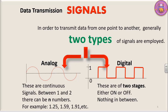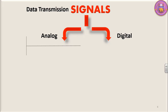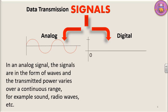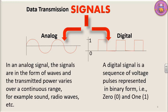On the other side, we have digital signals. Digital signals are of two phases — either it can be on or it can be off; there is nothing in between. But in the case of analog, fractional numbers are there. In an analog signal, the signals are in the form of waves and the transmitted power varies over a continuous range — for example, sound, radio waves, etc. In the case of digital signals, they are in the form of 0s and 1s. A digital signal is a sequence of voltage pulses represented in binary form, i.e. 0s and 1s.